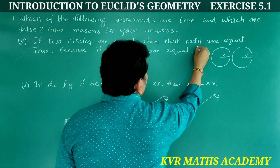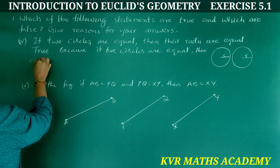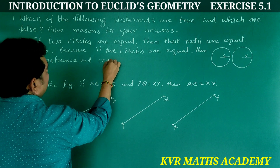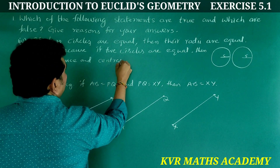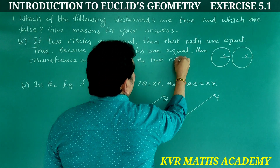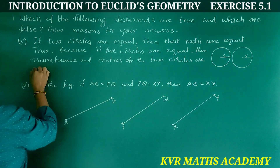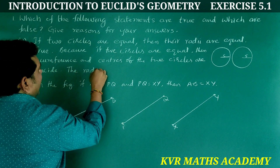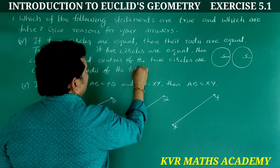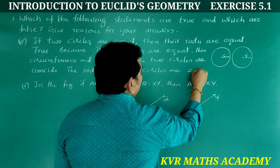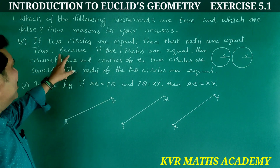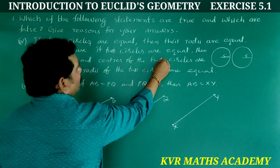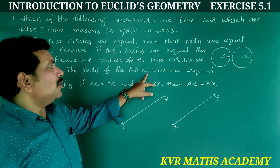Fourth statement concerns two circles: if the centres of two circles coincide, then the radii of the two circles are equal. Because if two circles are equal, then the circumferences and centres of the two circles coincide, and the radii of the two circles are equal.